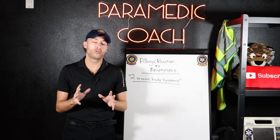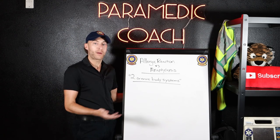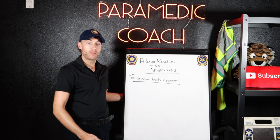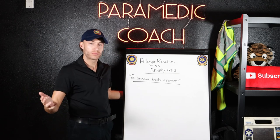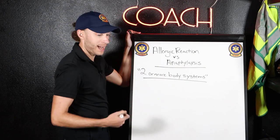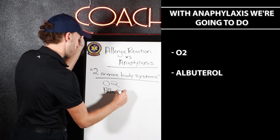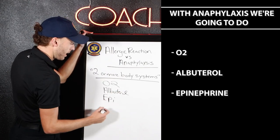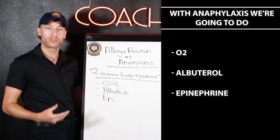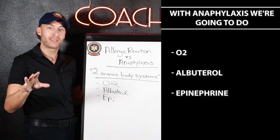These two drugs we talked about earlier with the receptors are part of your AAC mnemonic. For a simple allergic reaction, we get vitals, we monitor, and if your service allows Benadryl, we give it. For anaphylaxis, this is where you step up to the plate — act quick. Of course, we do O2, of course we do albuterol, and then epinephrine. These three main players act on the alpha-1, beta-1, and beta-2 receptors to save this patient from going into anaphylactic shock.